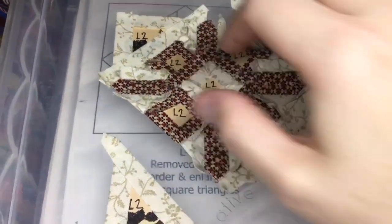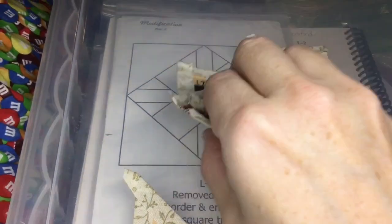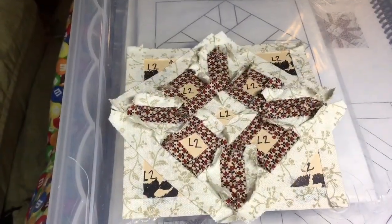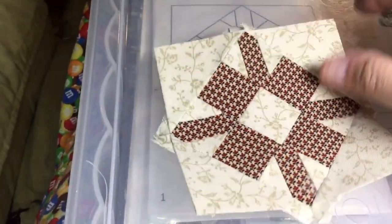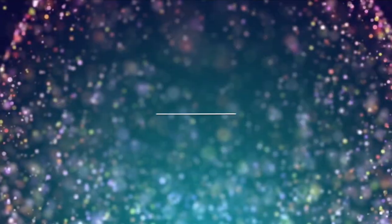So I've attached opposite corners to the center part and now it's just a matter of attaching the other two. So I've attached the other two triangles on the corners and now I have a completed L2 block.